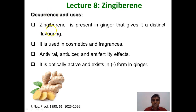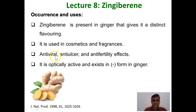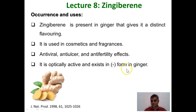The major source of zingiberene is ginger. It is used as cosmetics as well as fragrances. Zingiberene shows various medicinal properties such as antiviral, anti-ulcer, and it also shows anti-fertility effects. It is an optically active compound and it exists in the levo form in ginger.